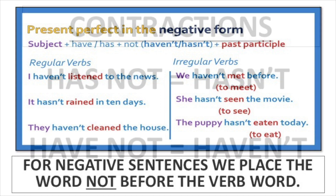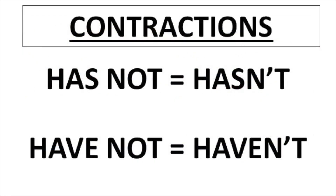All we do is we delete the O from not and add an apostrophe where the O is supposed to be. So have not can be shortened to haven't, and has not can be shortened to hasn't. Contractions — take the two words has not and make them into one shorter phrase: hasn't. For contractions we use the apostrophe to replace the letter that's been deleted — in this case, the O gets deleted.